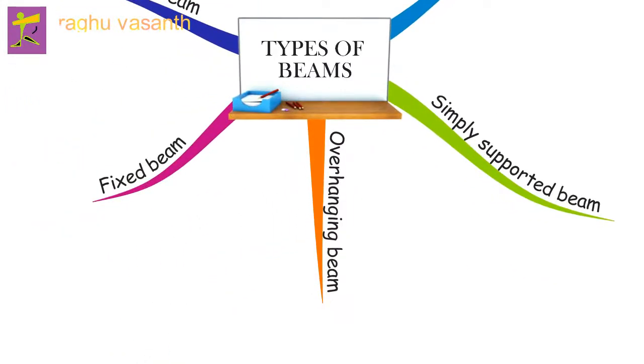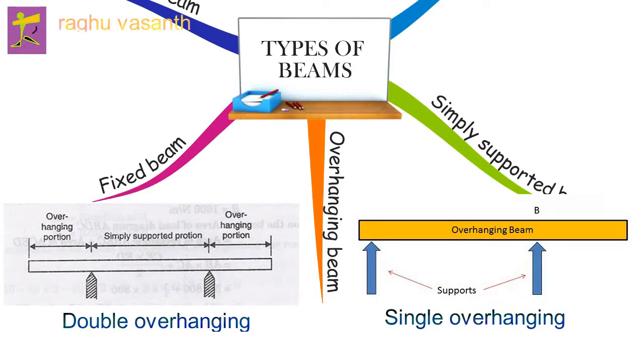An overhanging beam has two supports, hinged at one end and roller at the other end, with an overhanging portion at one or both supports. Loads can be applied on the overhanging portion and converted to equivalent moment at the support. Moment and reactions are the same as those of a simply supported beam. There are two types of overhanging beams: single overhanging beam and double overhanging beam.